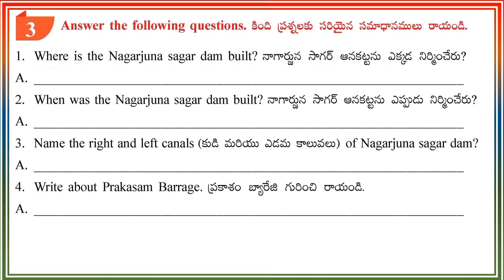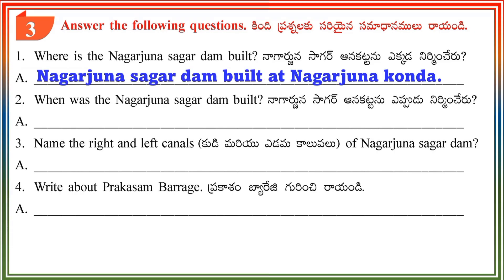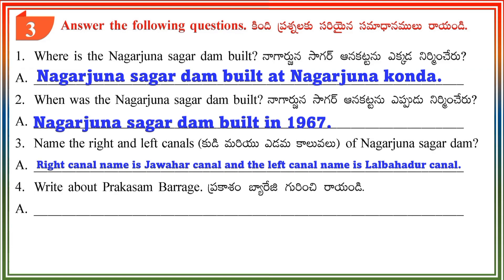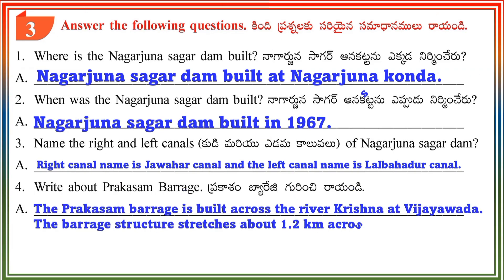Section 3: Answer the following questions. Question 1: Where is the Nagarjuna Sagar Dam built? Answer: Nagarjuna Sagar Dam is built at Nagarjuna Ponda. Question 2: When was the Nagarjuna Sagar Dam built? Answer: Nagarjuna Sagar Dam was built in 1967. Question 3: Name the right and left canals. Answer: The right canal name is Jawahar Canal and the left canal name is Lal Bahadur Canal. Question 4: Write about Prakasambaraj. Answer: The Prakasambaraj is built across the river Krishna at Vijayawada. The barrage structure stretches about 1.2 km across NTR and Guntur districts.